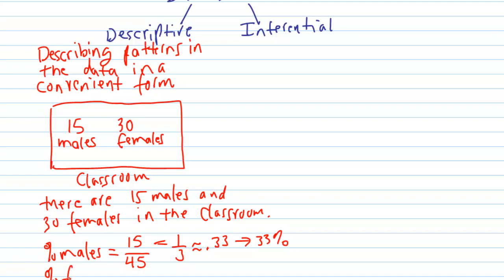Do the same thing for females. To calculate the percent of females, take the number of females divided by the total, which gives two-thirds, or 0.67. Multiplying by 100% gives us 67%. So there are 33% males and 67% females in the classroom.